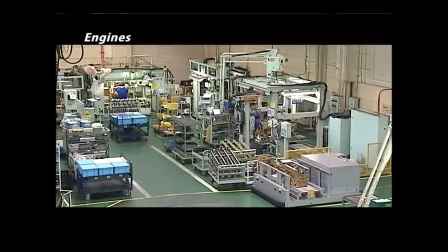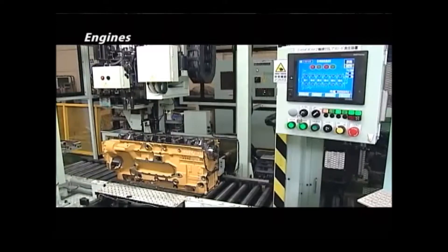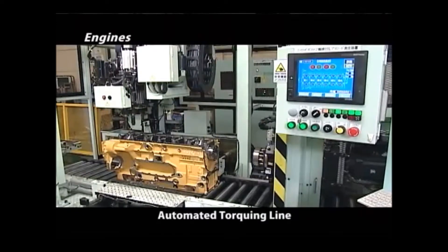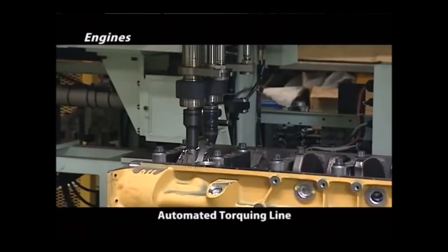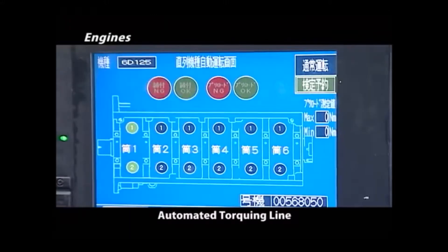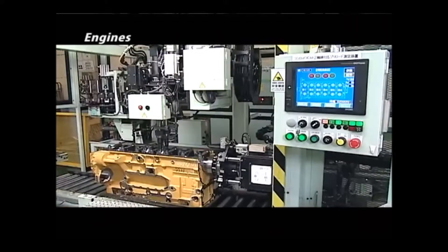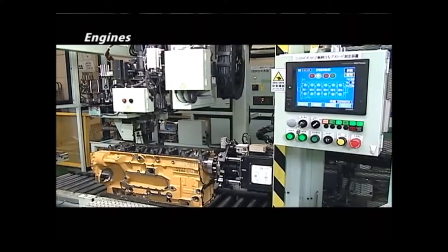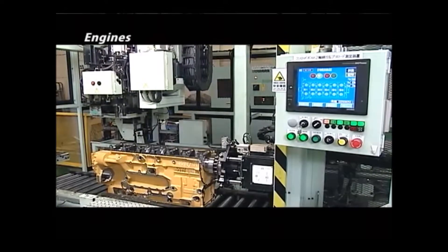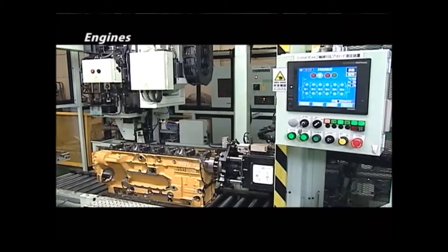Next is the assembly process. Quality assurance includes an automated torquing line. As well as controlling torque, the line automatically inspects and measures work to prevent any defective parts from going on to the next process.